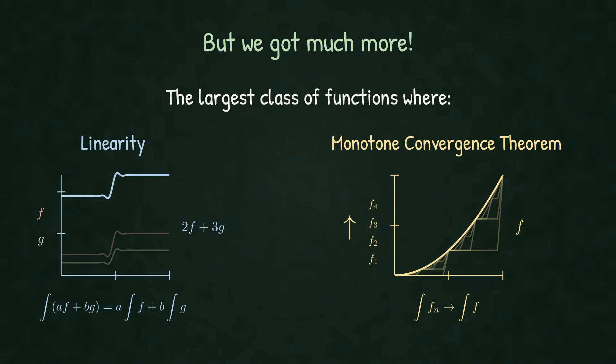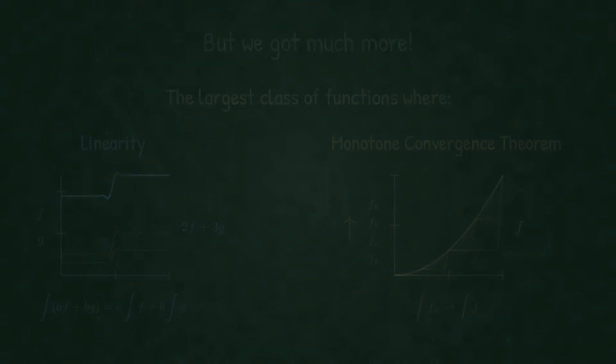For Riemann integration, monotone sequences can fail. The limit might not be Riemann integrable. Lebesgue integration is the maximal extension where both linearity and monotone convergence hold. These properties together make Lebesgue integration incredibly powerful for analysis.